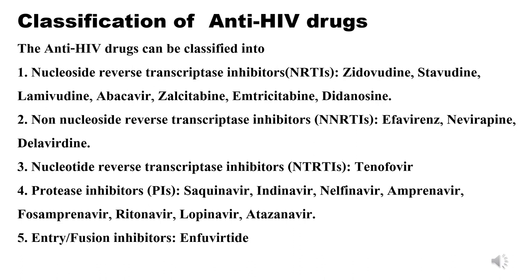Category 4: Protease inhibitors (PIs) — examples: saquinavir, indinavir, nelfinavir, amprenavir, fosamprenavir, ritonavir, lopinavir, atazanavir. Category 5: Entry/fusion inhibitors — example: enfuvirtide.